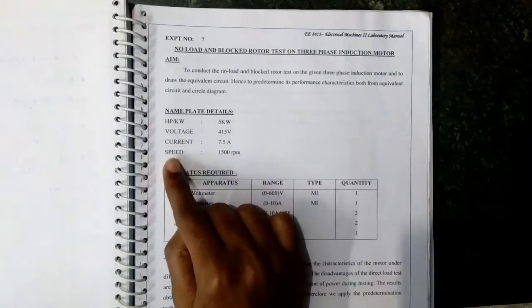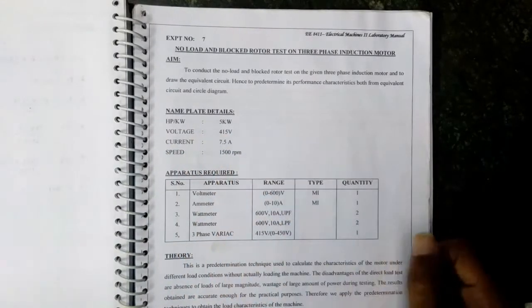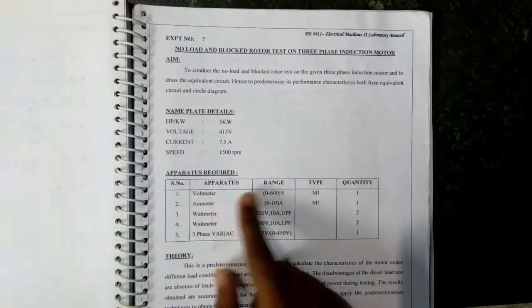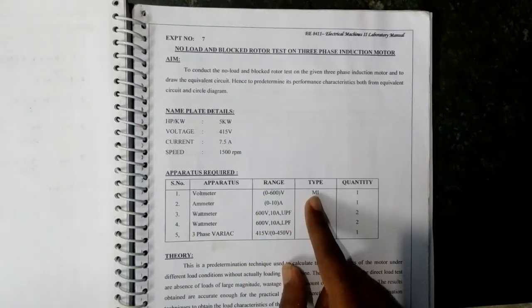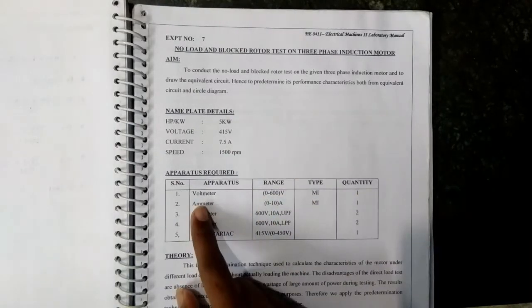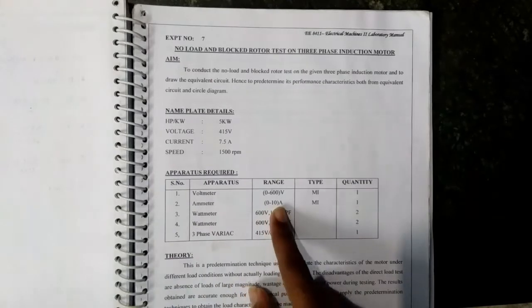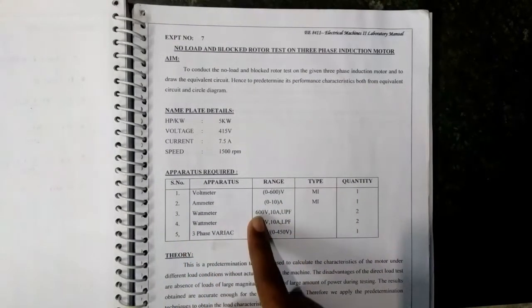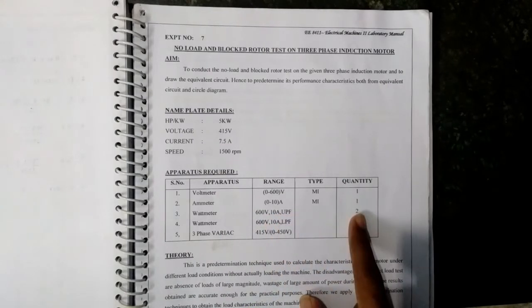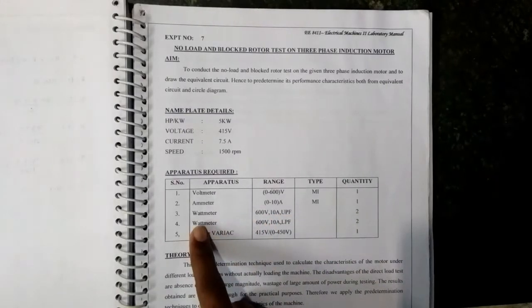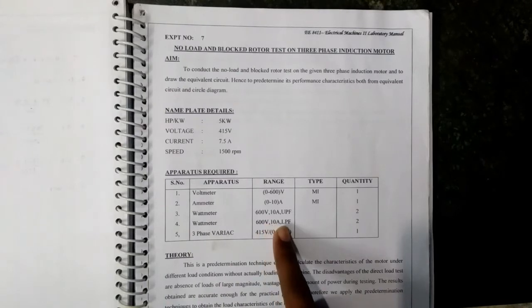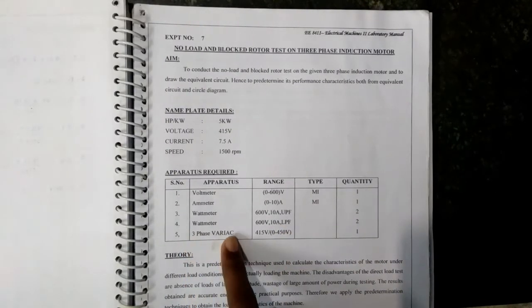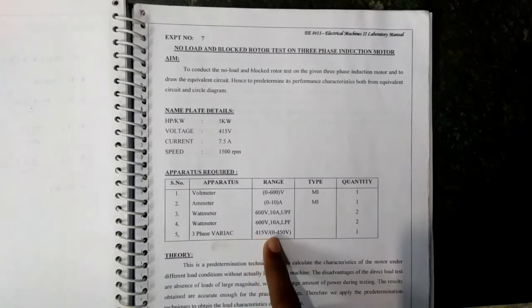Speed is 1500 rpm. The apparatus required for the experiment are: voltmeter 600 volt MI type quantity 1, ammeter 0 to 10 ampere MI type quantity 1, wattmeter 600 volt 10 ampere UPF quantity 2, wattmeter 600 volt 10 ampere LPF quantity 2, and a three-phase variate 415 volt/0 to 450 volt quantity 1.